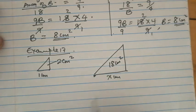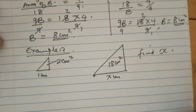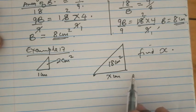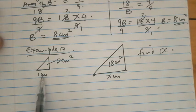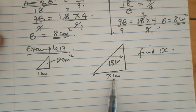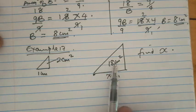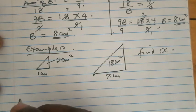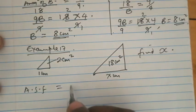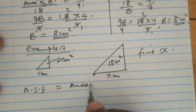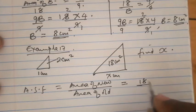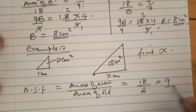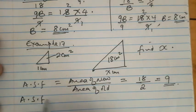The question asks us to find x, the base length of the new triangle. We scrutinise the two diagrams to find where we have complete information. Is it in the dimensions? No — we have one length but not the corresponding length, which is exactly what we are looking for. Is it in the area? Yes — we have both areas. So the area scale factor equals the area of new over the area of old: 18 over 2, which equals 9.